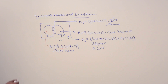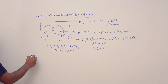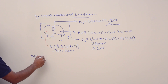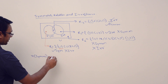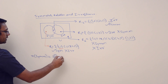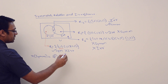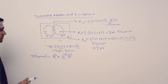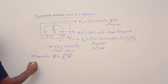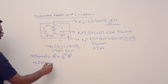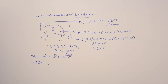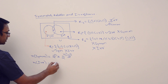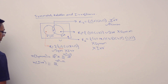Now let us look at the number of relations which are symmetric — we have already seen this. The number of symmetric relations is 2 raised to the power n, multiplied by 2 raised to the power (n² − n)/2. The number of relations which are irreflexive is 2 raised to the power (n² − n).